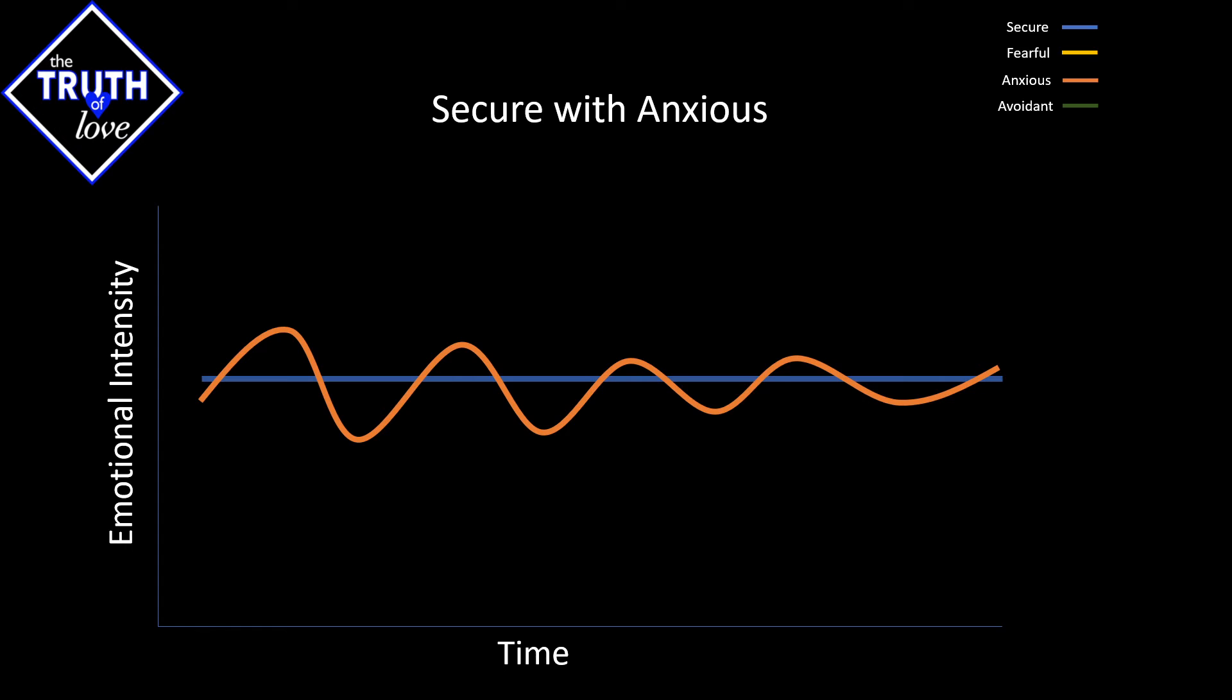This is actually done on purpose because the secure person has a good foundation of who they are, a good foundation of their value system. And as such, they aren't triggered by the anxious person going up and down in their emotions. In fact, that balancing act has the exact opposite effect.